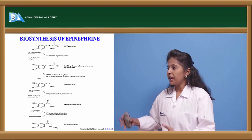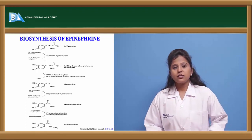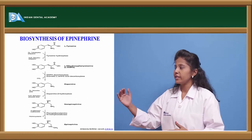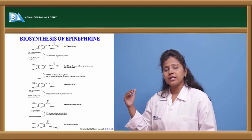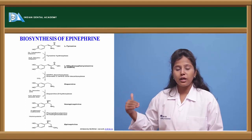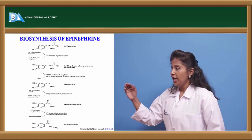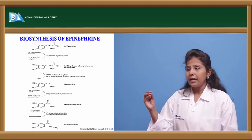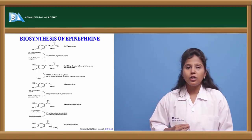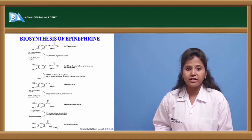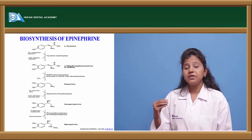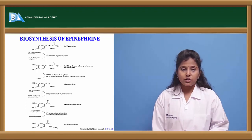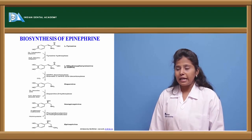Here we can see the biosynthesis of epinephrine. From L-tyrosine, L-DOPA is synthesized; from L-DOPA, dopamine; from dopamine, norepinephrine. Once norepinephrine is formed, the enzyme phenylethanolamine N-methyltransferase (PNMT) acts on it to produce epinephrine (adrenaline).